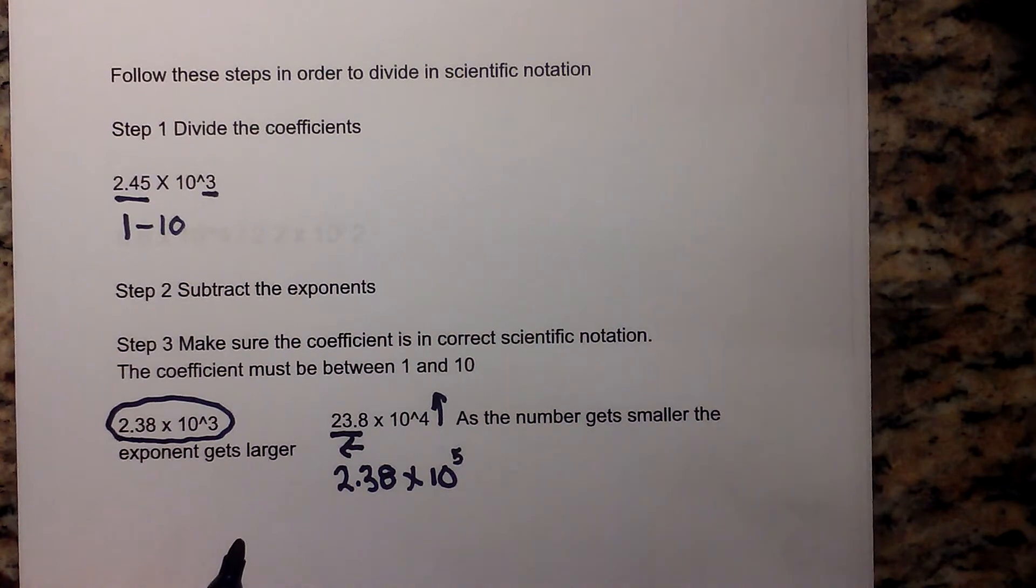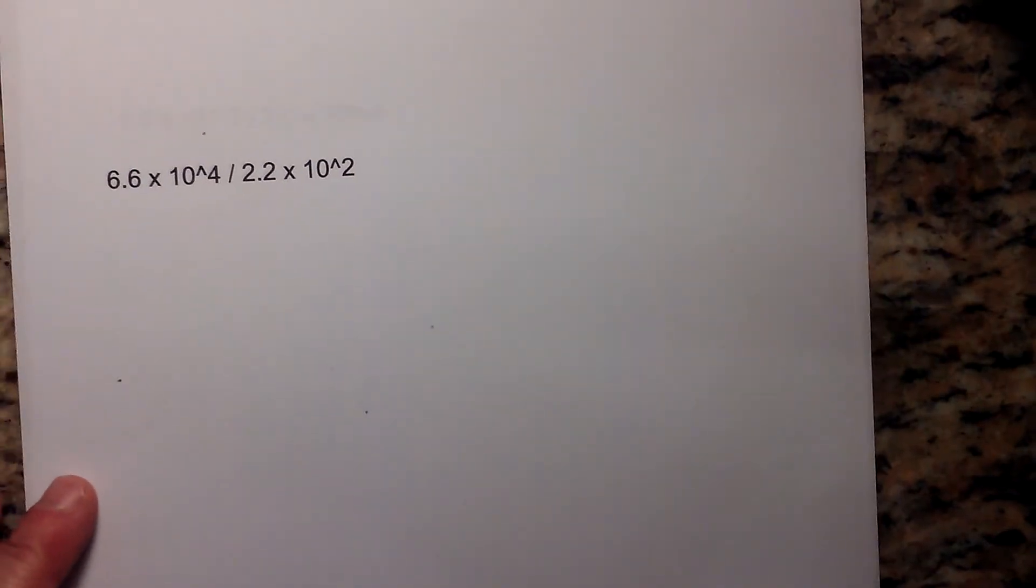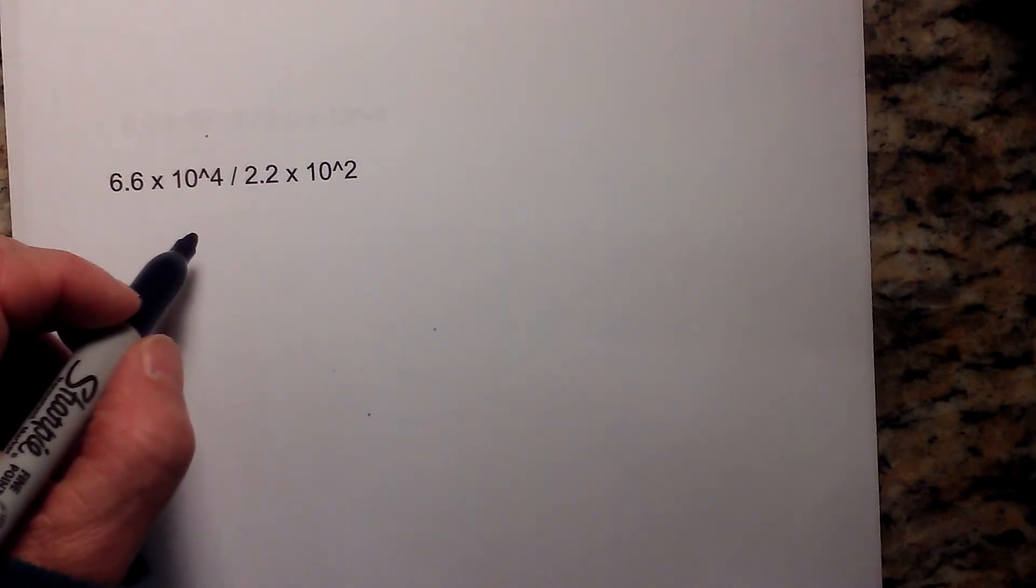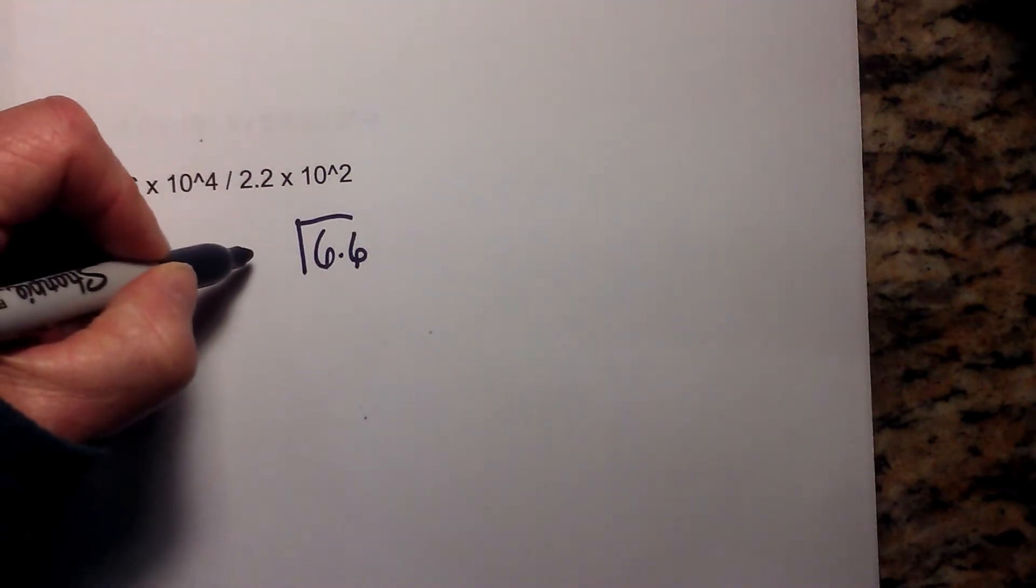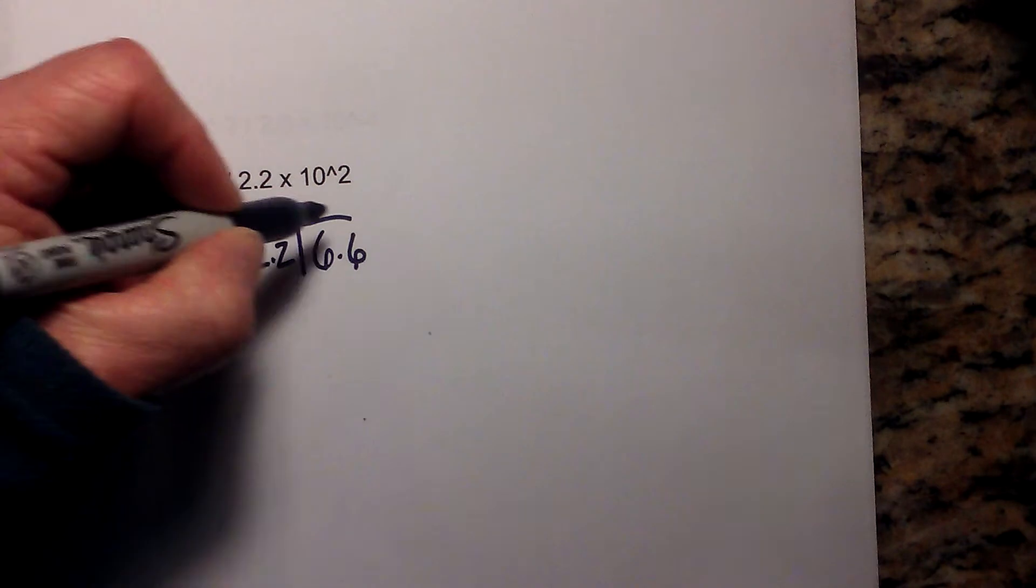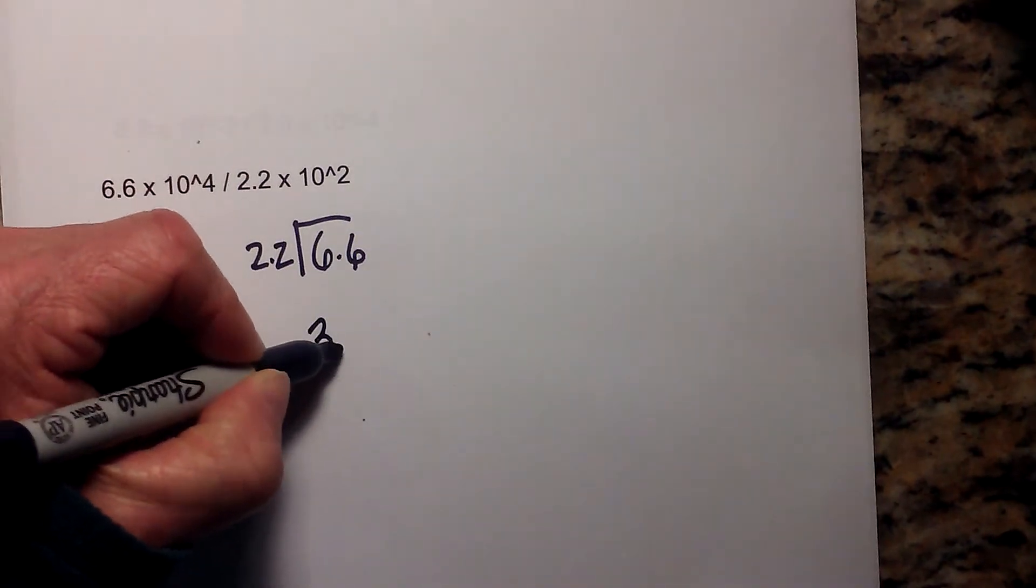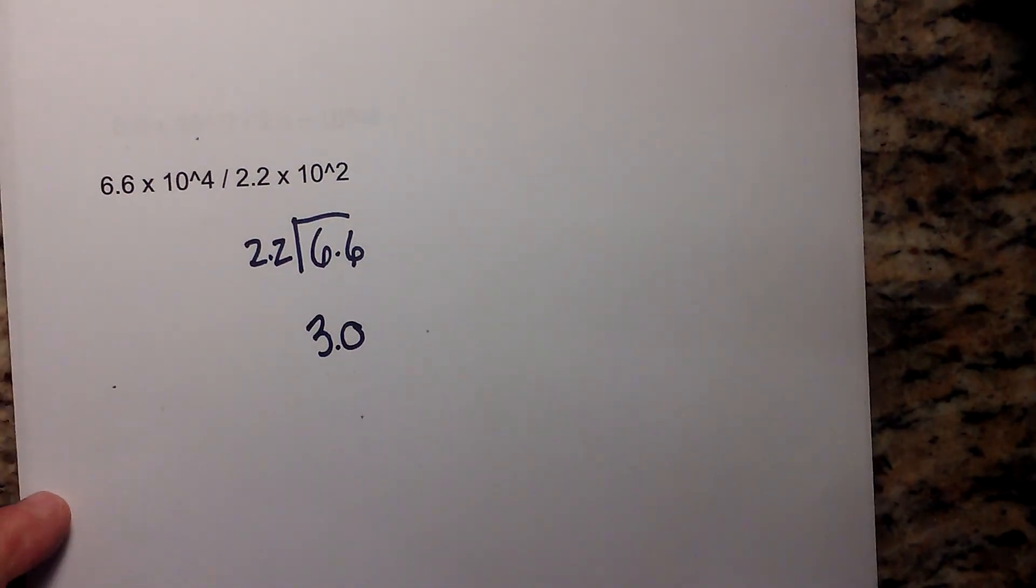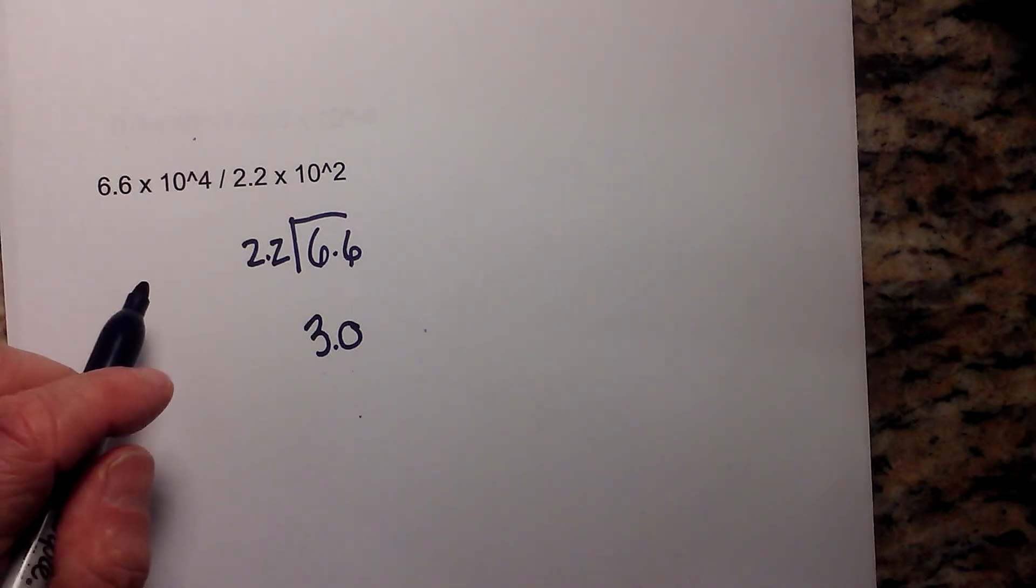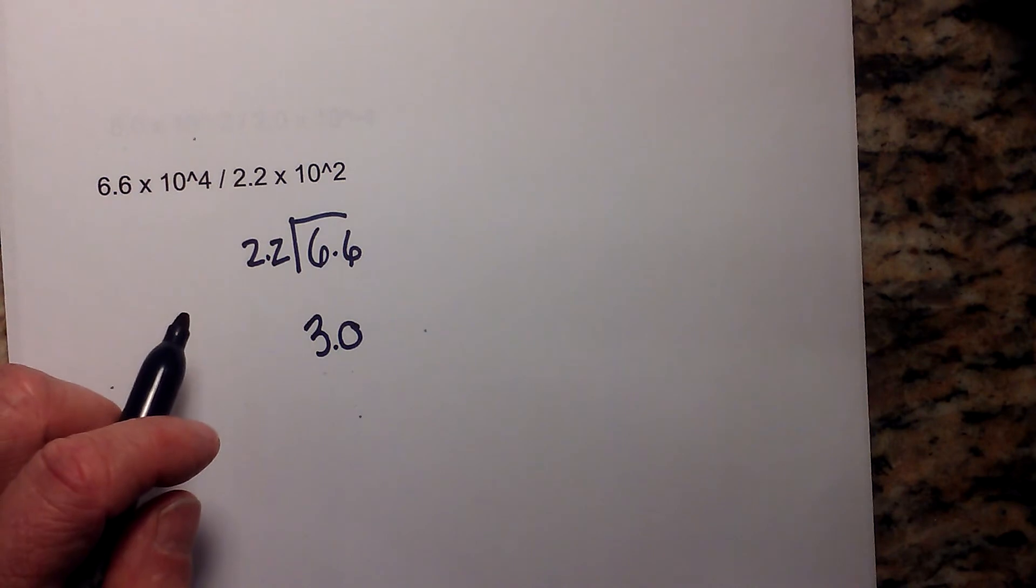Let's work two examples. Question number one is 6.6 times 10 to the fourth divided by 2.2 times 10 to the second. First I will divide the coefficients, so 6.6 divided by 2.2 equals 3.0. I'll leave a link for how to divide decimals if that would help.